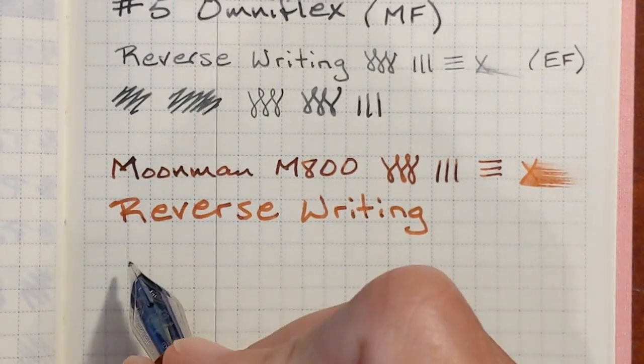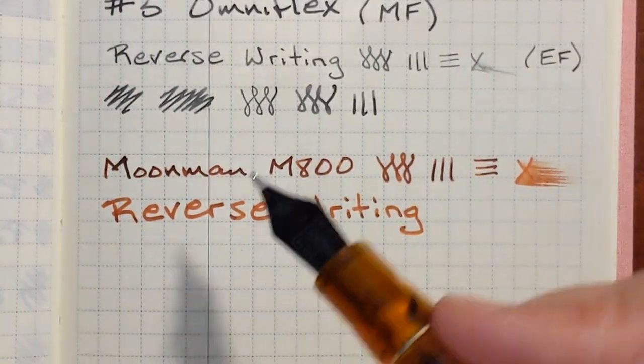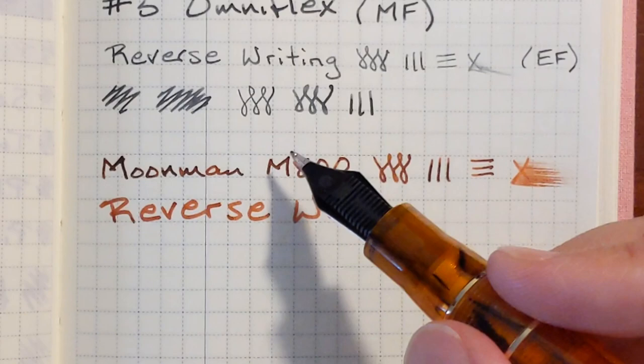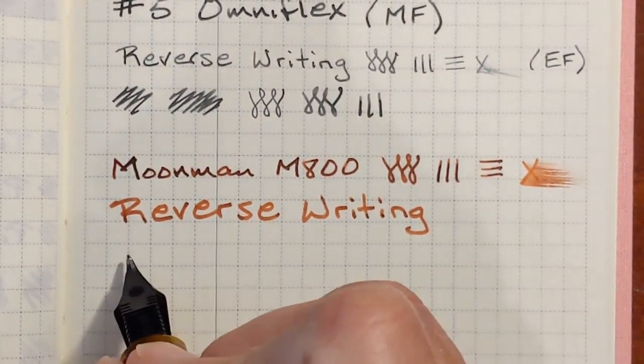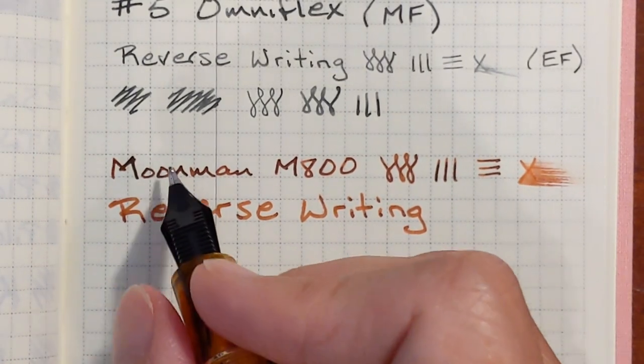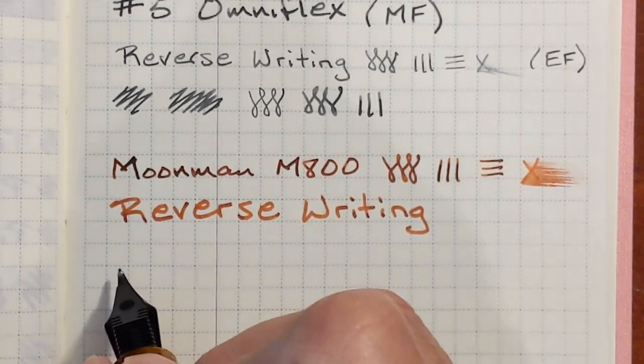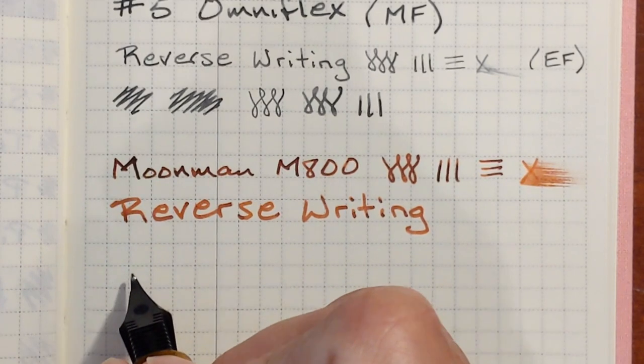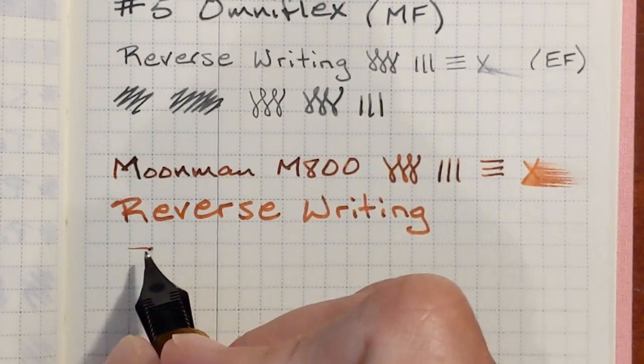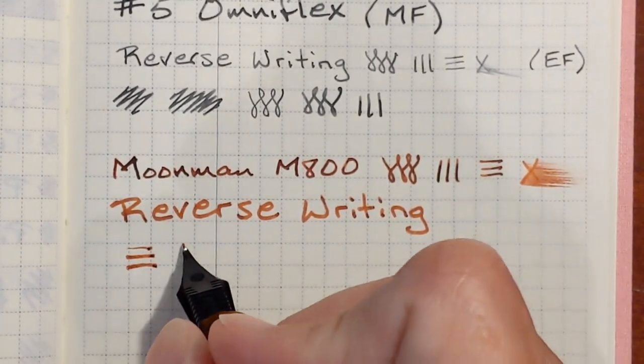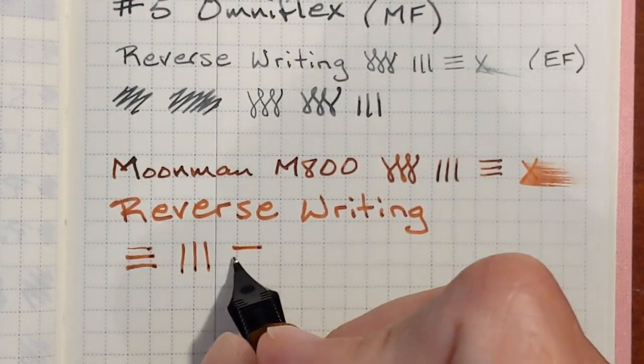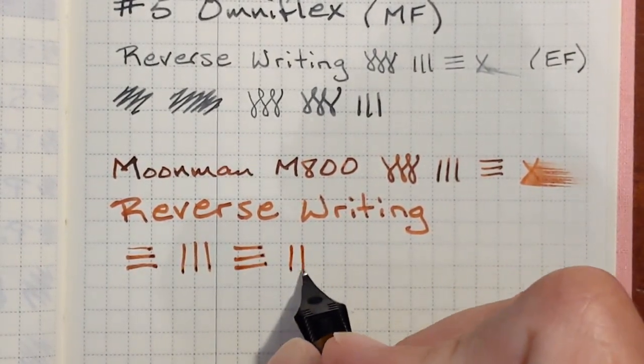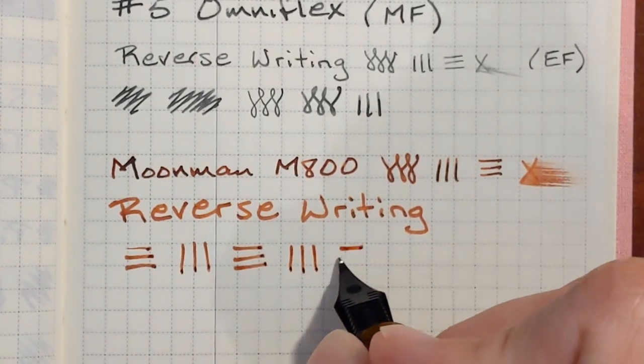What I did was I started by flipping it over and grinding the back side into a blade grind, but I wasn't getting the difference in line width that I wanted. The down strokes were still very fine, but the side strokes then were wider. So I just kind of flattened it out some more. And now this is very smooth and enjoyable to write with.